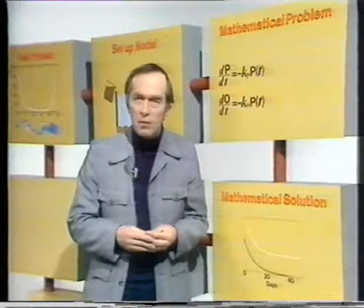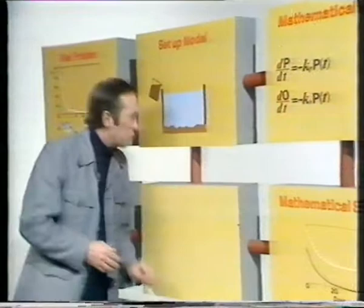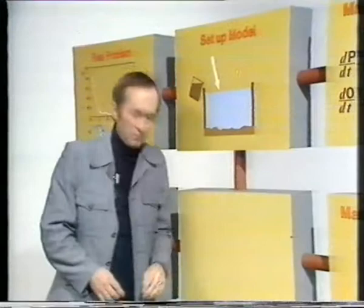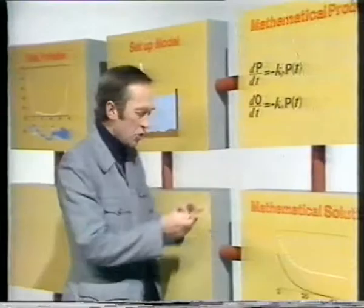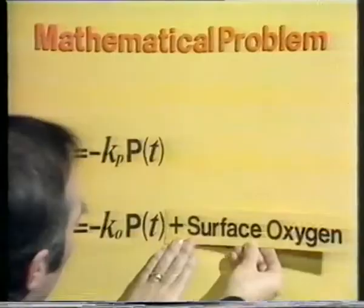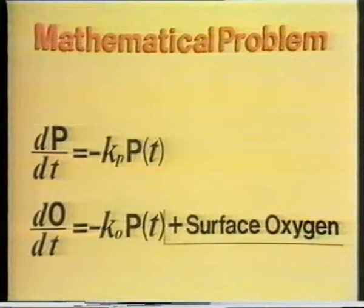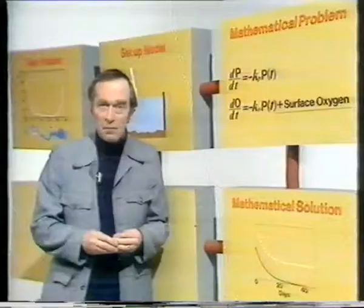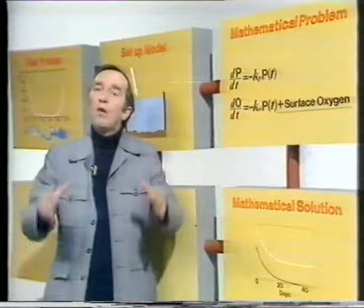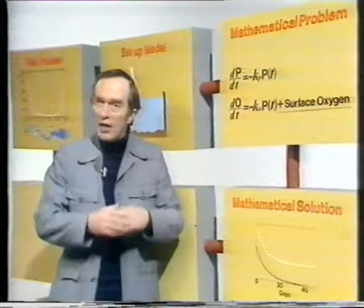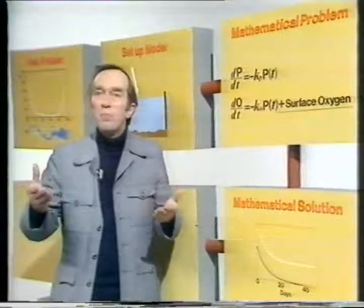Our model has to be elaborated — we have to include an input of oxygen into the surface, which is happening all the time. And that affects our equation: in the oxygen equation we've got an extra term which represents an input of oxygen from the surface. The problem is really about oxygen and pollutant, and this effect of absorption of oxygen on the surface means that any once-and-for-all dumping of pollutant would actually be cleared by this absorption of oxygen, and ultimately you'd get up to 100% oxygen in the water again.